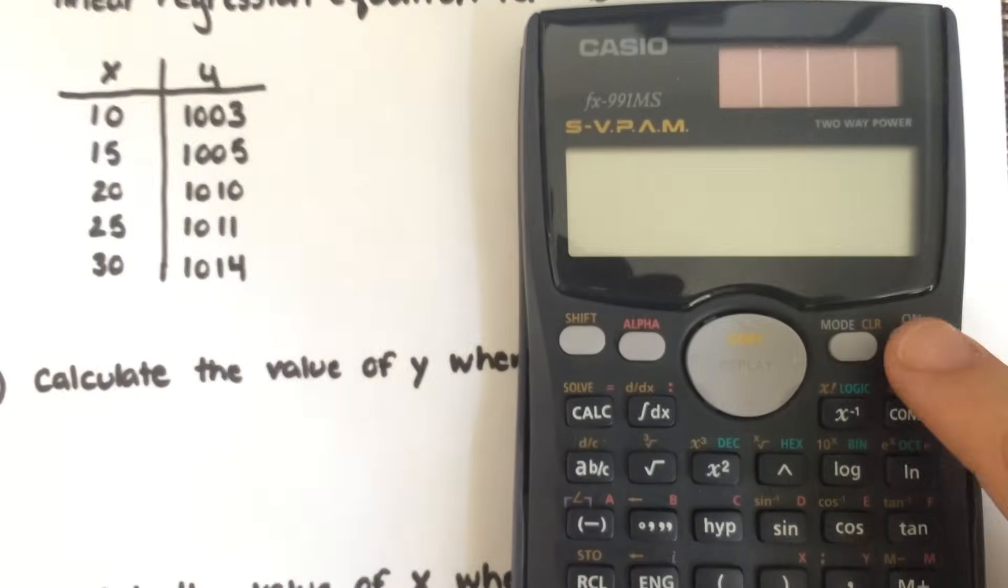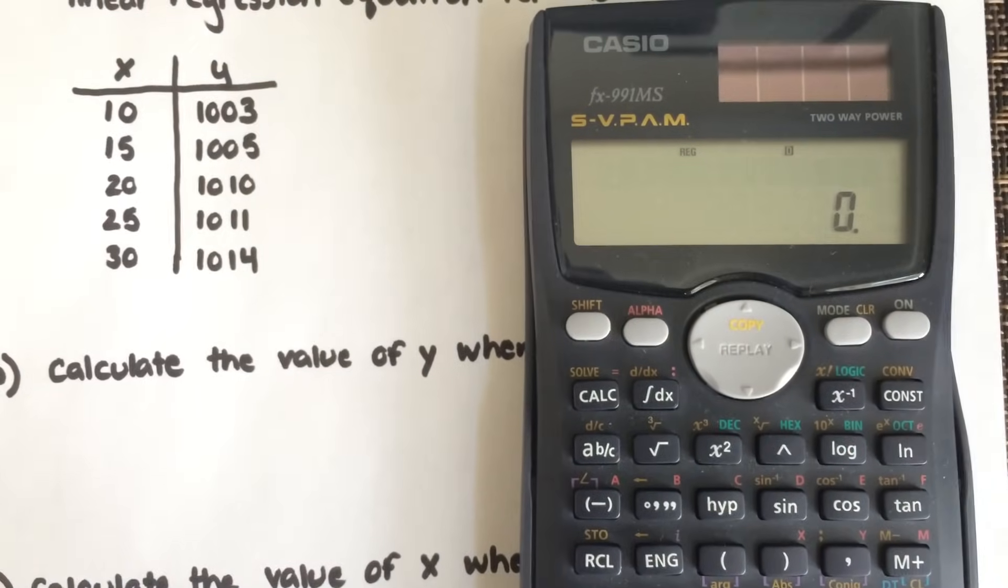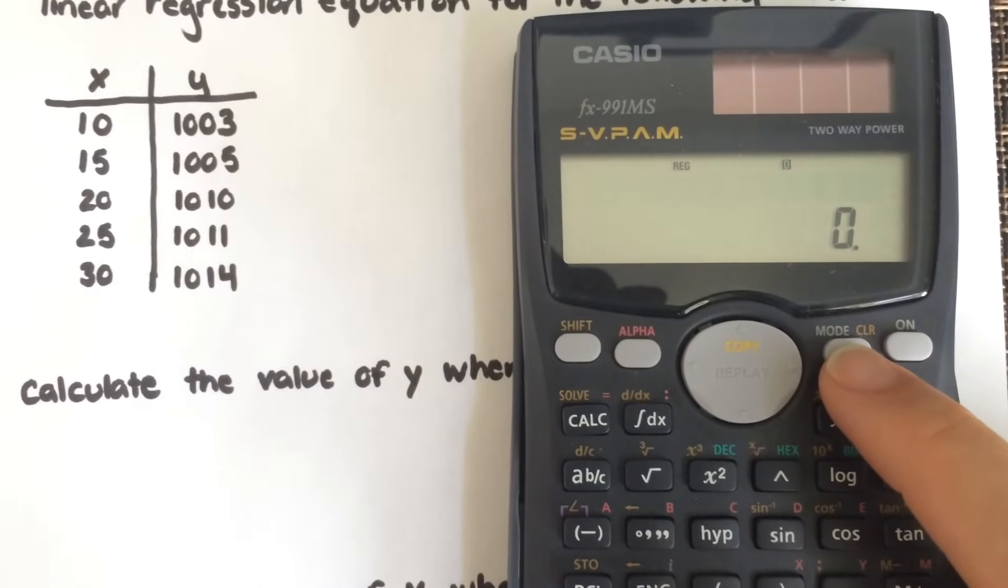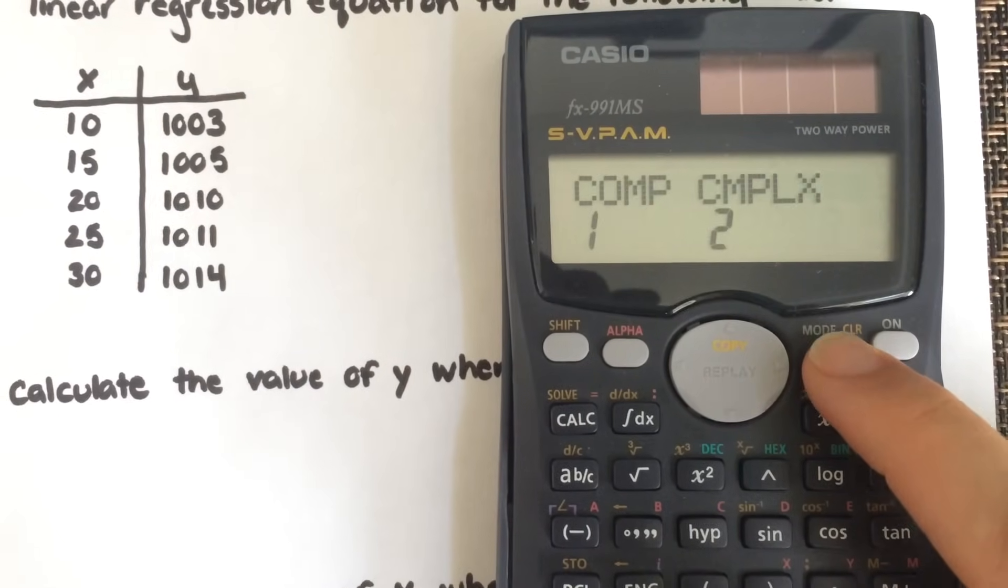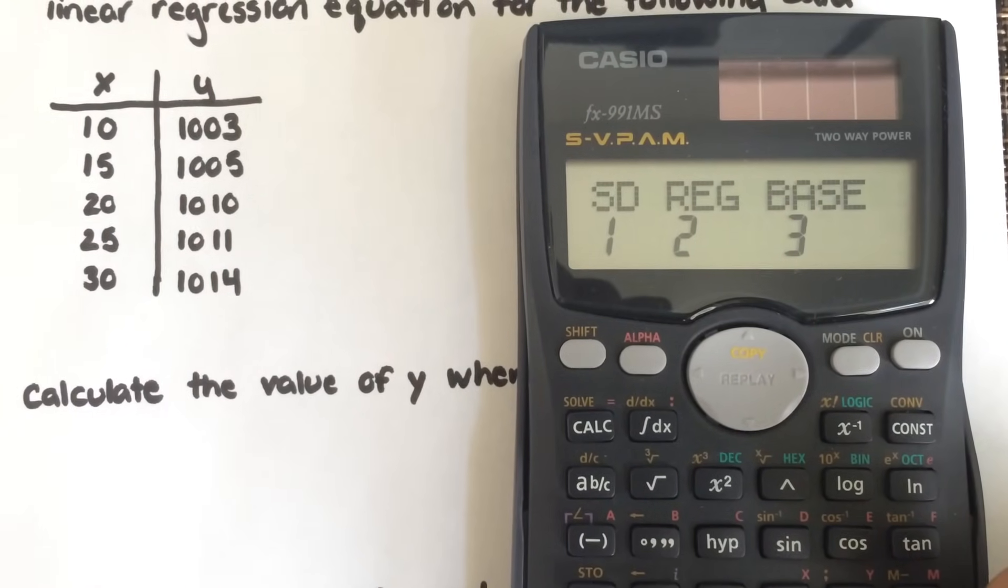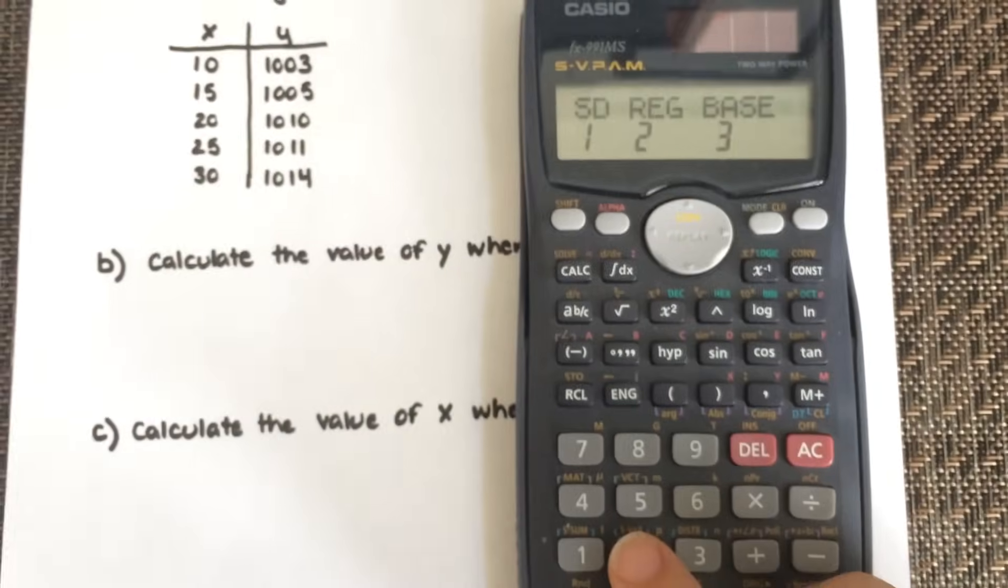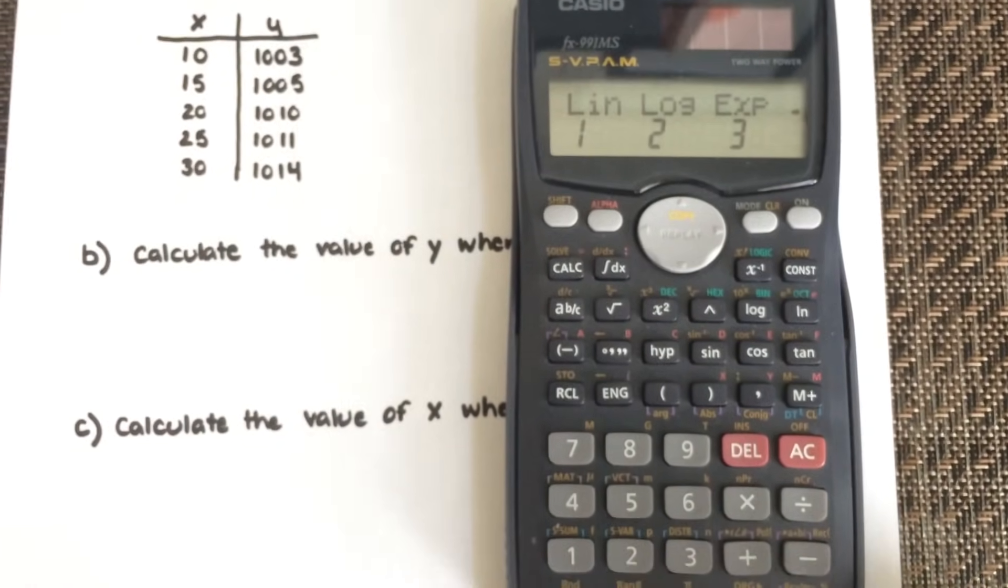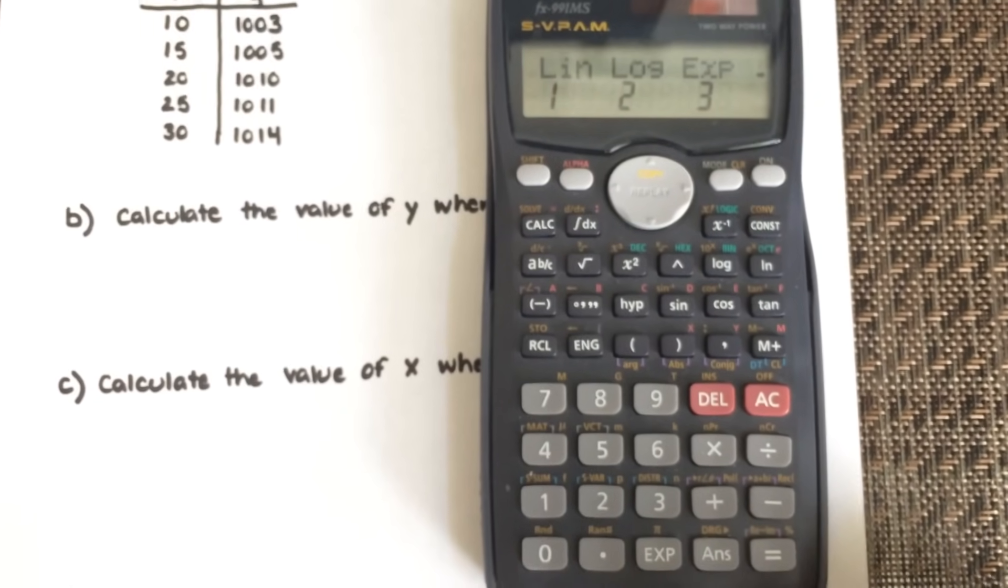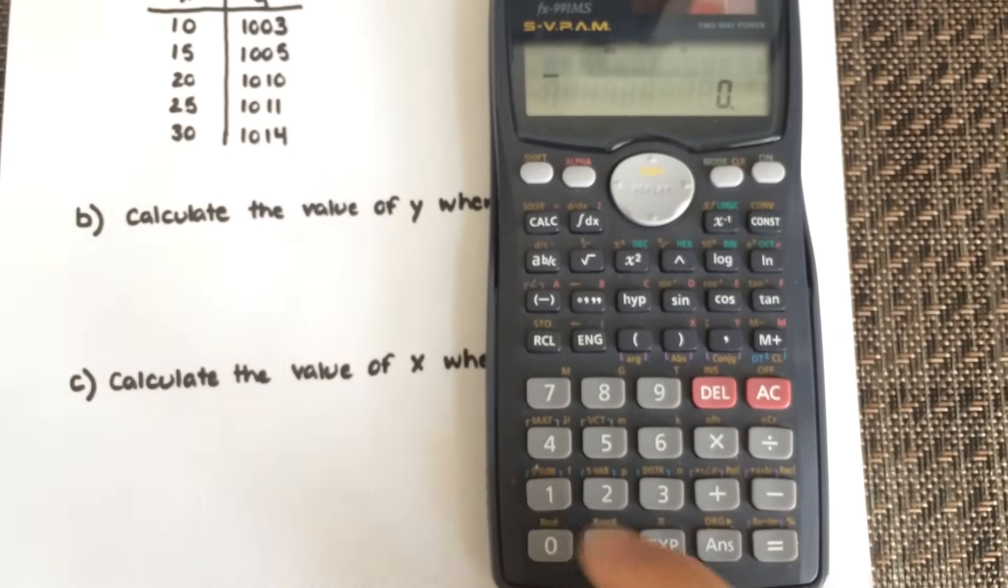The first thing you need to do when you turn on your calculator is to change it into regression mode. You're going to need to select your mode key, which is right here. Select mode twice. You're going to see R regression right here, which is the number 2, so you're going to select 2. Then there's different options for different kinds of regressions. To actually calculate a linear regression, you're going to select 1 for linear.